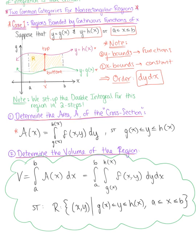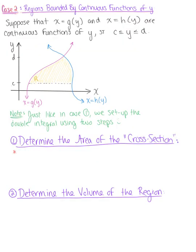In Case 2, we consider a region bounded by continuous functions of y. Suppose that x equals g of y and x equals h of y are continuous functions of y, such that y is between c and d. We have another illustration of a potential bounded region. Just like in Case 1, we can set up the volume integral for this non-rectangular region in two steps. Step 1 is to determine the area of the cross section.